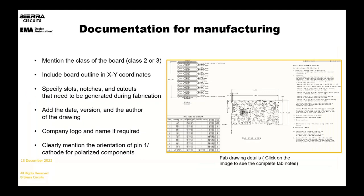General but important: what should go into the fabrication drawing. The most important thing is the IPC spec that your board needs to meet. Most people use the 6012 class two versus class three. Class three has more requirements that can make manufacturing of the board more difficult. So only specify class three if you actually need class three.